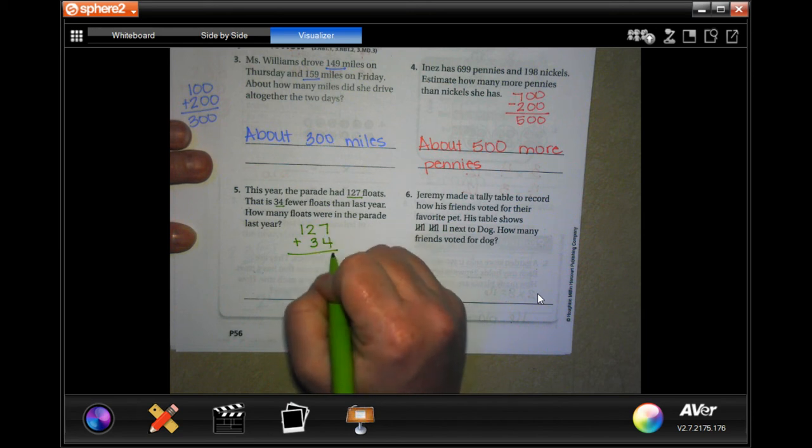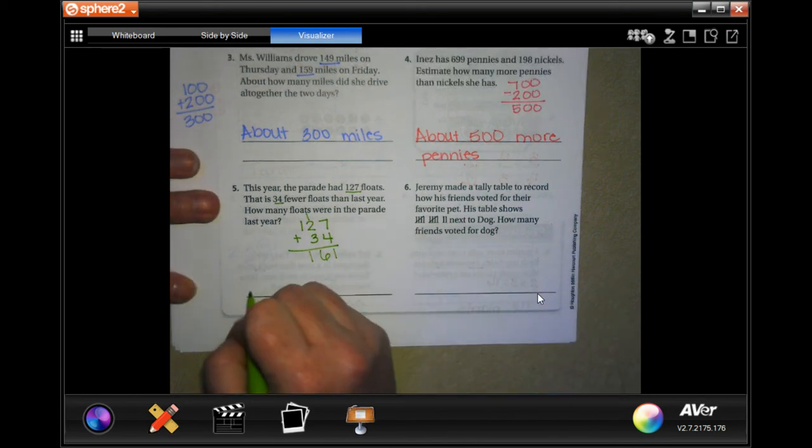So, 7 plus 4 is 11. I'm going to carry the 1. 1 plus 2 is 3. Plus 3 more is 6. And I'm going to bring down that 1. So, 161 floats.